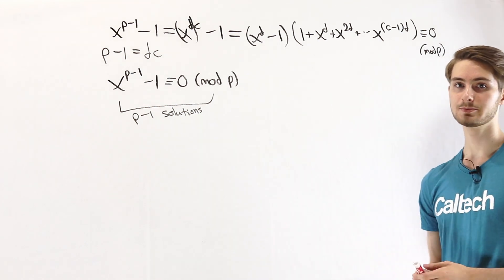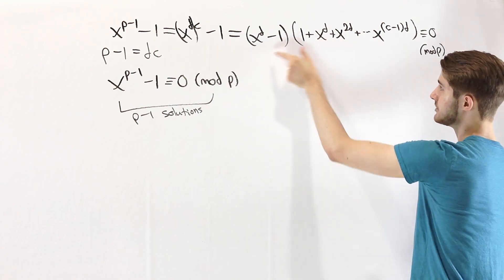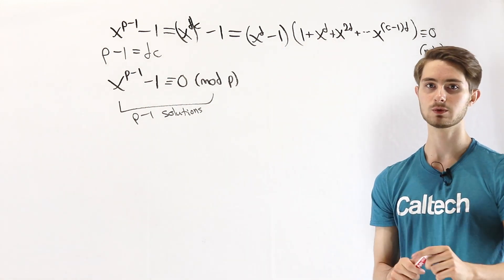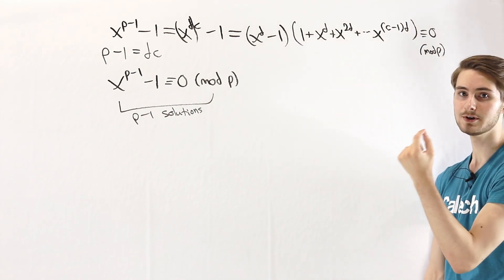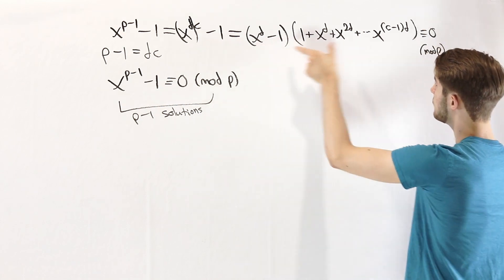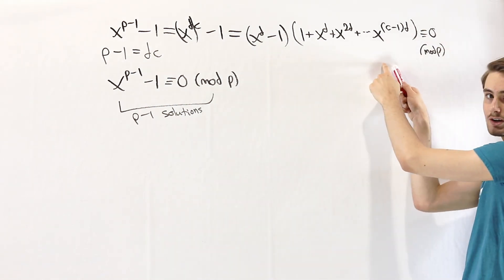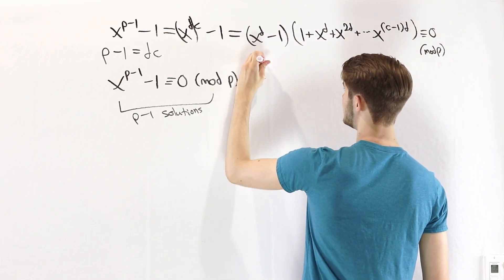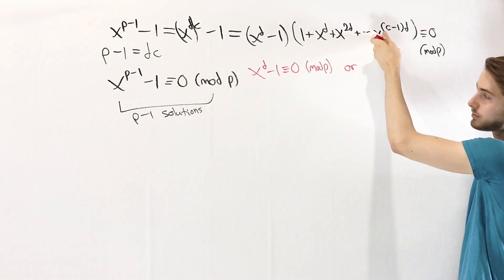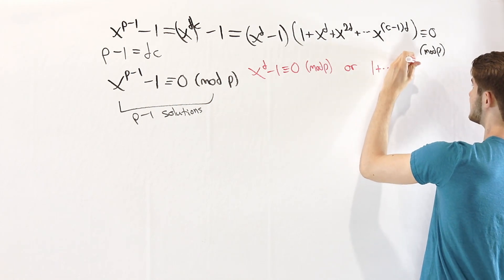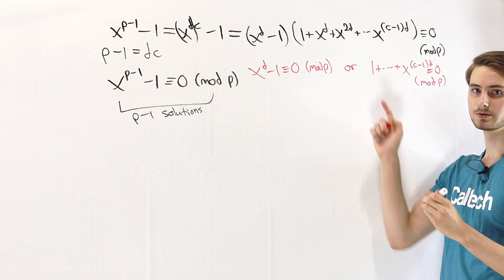You might remember from basic algebra that if we have a product of two expressions equal to 0, then one of the factors has to equal 0. We can say the same thing for congruences: if we have a product of two expressions congruent to 0 mod a prime p — only if it's prime — then one of these two numbers has to be congruent to 0 mod p. That means we can split this congruence into two: either x to the d minus 1 is congruent to 0 mod p, or the expression 1 plus all the way up to x to the (c minus 1)d is congruent to 0 mod p. So one of these two congruences has to be true.